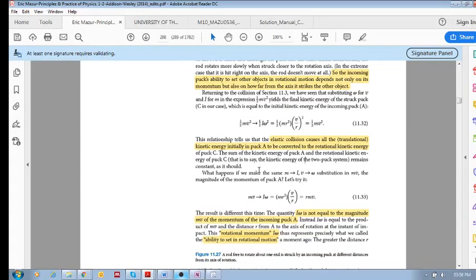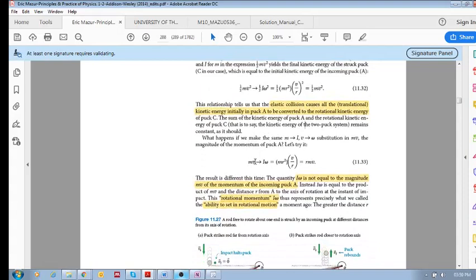However, if you look at that same puck, its translational momentum is mv. But if you want to look at its quantity, I omega, which is the equivalent rotational quantity, you will see that I omega is equal to r mv.